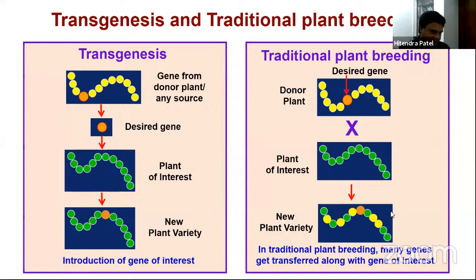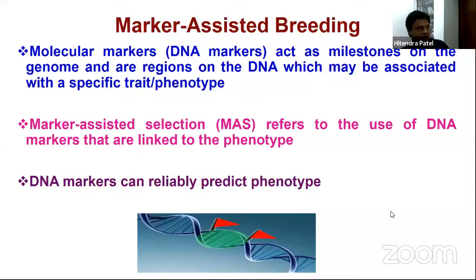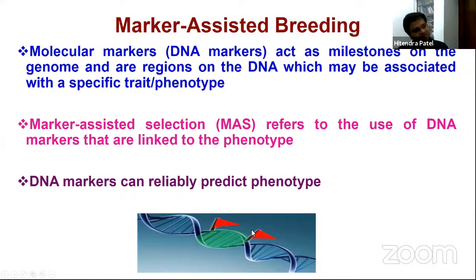This is where marker-assisted breeding or marker-assisted selection comes in. DNA markers act as milestones on the genome — they are regions on the DNA which may be associated with a specific trait or phenotype. If this is the genome and this is the region responsible for the phenotype, these markers can be used to know if this region was transferred during breeding. The assumption is that these DNA markers can reliably predict the phenotype; they should be linked to the phenotype.